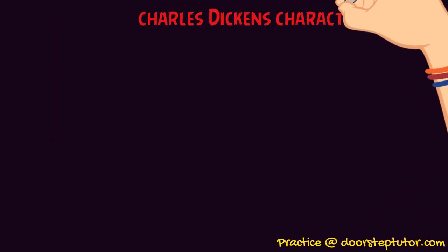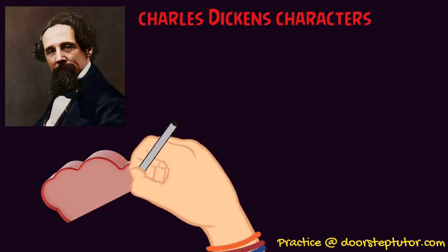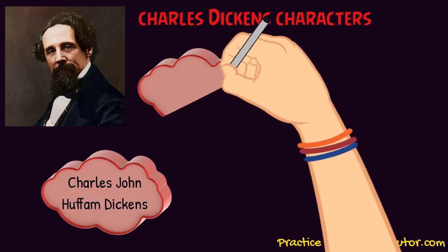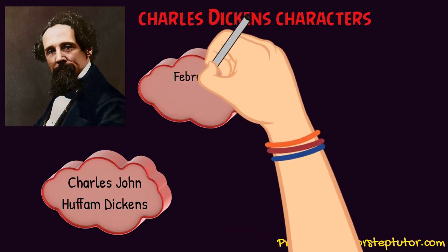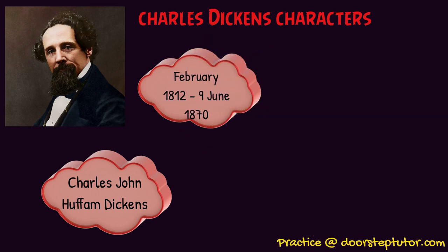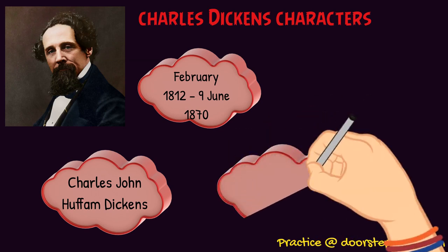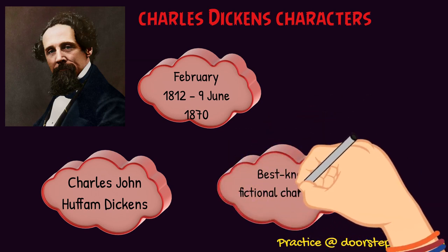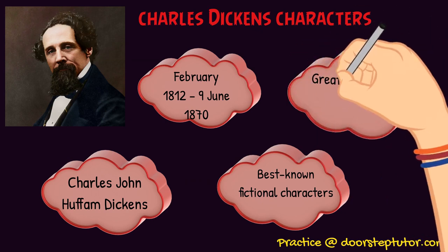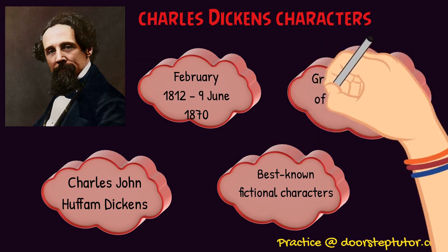Charles Dickens was known as Charles John Huffham Dickens. He was born on 7th February 1812 at Hampshire, England. He was an English writer and social critic. He created some of the world's best known fictional characters and is regarded by many as the greatest novelist of the Victorian era.